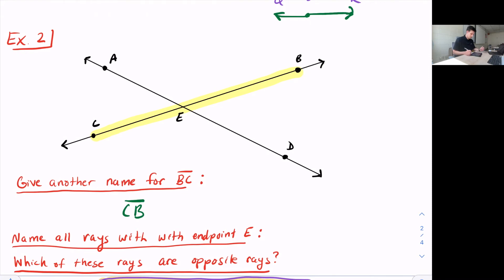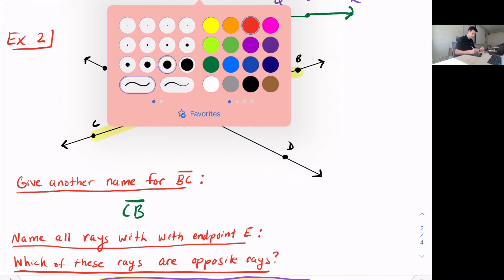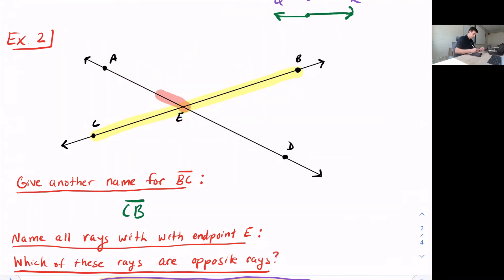Now they want us to name all rays with endpoint E. So we could say our endpoint is here. So we have ray EA, we have EB, we have ED, and we have EC. So this would be ray EA, ray EB, ED, and ray EC. All four of those.